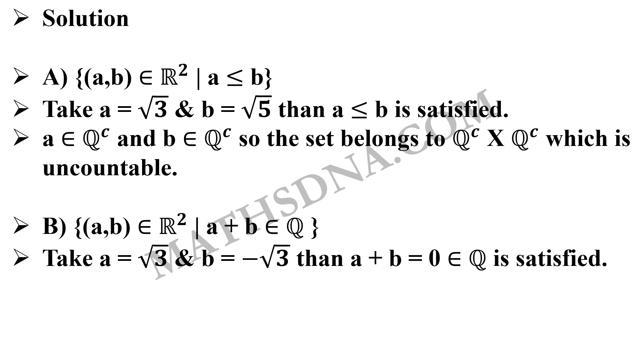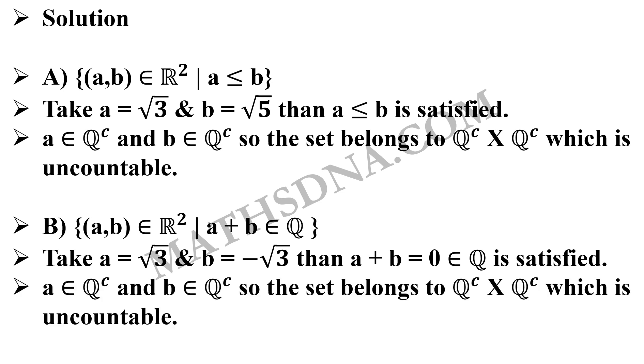So both √3 and -√3 will be our elements in the set. And again, as they are irrational, their product Qᶜ × Qᶜ will be again uncountable.